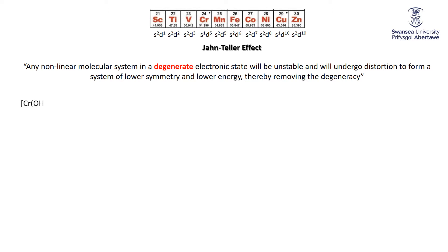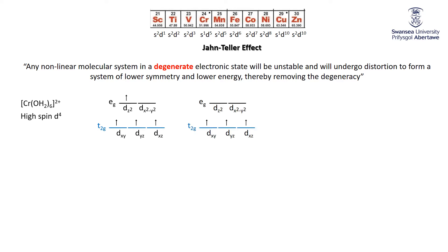What do I mean by degenerate electronic state? Consider the molecule we just looked at at the end of the last video: Cr(OH₂)₆²⁺, hexa-aqua chromium(II), which is a high spin d4. When we place the high spin d4 electrons, the three electrons go into the t2g no problem, and then the fourth electron goes into the eg, but it can go into the dz² or the dx²-y². Two possible electronic states at the same energy — they are degenerate. This corresponds to the perfectly octahedral hexa-aqua chromium(II).